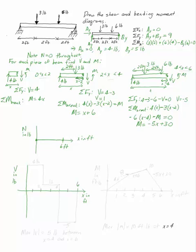So this is 4 and this is 2. Between 0 and 2, V is equal to 4 pounds. At 2, between 2 and 4, V is equal to 1 pound. And between 4 and 6, V is equal to minus 5. You can connect them if you want to or not if you don't. That's my V diagram.